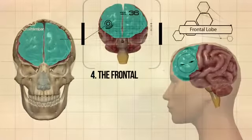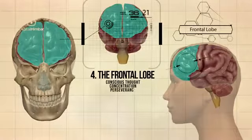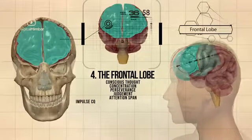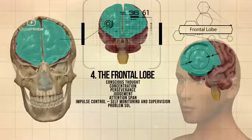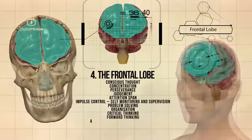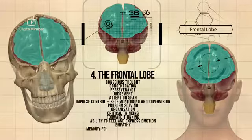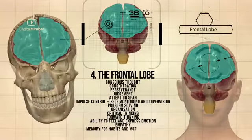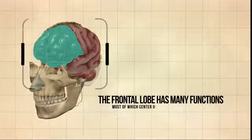And then there's the frontal lobe, which is responsible for conscious thoughts, concentration, perseverance, judgement, attention span, impulse control — which is self-monitoring and supervision — problem solving, organisation, critical thinking, forward thinking, ability to feel and express emotion, empathy, and memory for habits and motor activities. The frontal lobe has many functions, most of which centre on regulating social behaviour.